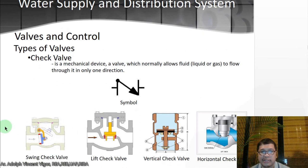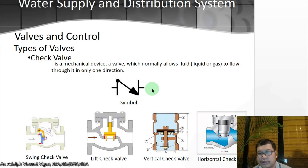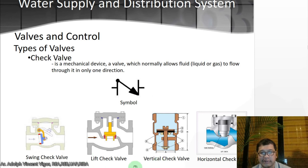Then you have the check valve — a mechanical device that normally allows fluid, liquid or gas, to flow through it in only one direction. When fluid passes through it, it only moves in a certain direction and backflow is not allowed. This is the symbol — familiarize yourselves with it. In some plumbing diagrams the triangle is no longer present. The types include: swing check valve, lift check valve, vertical check valve, and horizontal check valve.